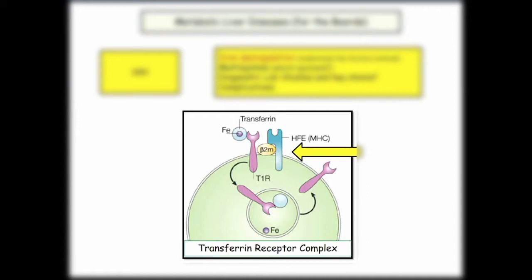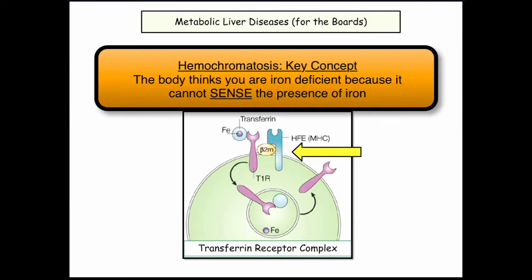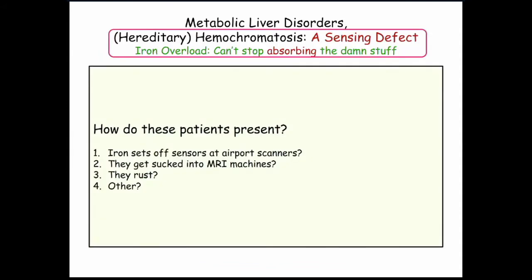This is the complex, and you need an intact complex to be able to absorb iron. If you have a defective HFE, you're not going to sense iron, so your body is going to chronically think that you're iron deficient. The problem with hemochromatosis is you just keep absorbing iron because your body doesn't know it's there due to the defective receptor. Hemochromatosis is a sensing defect — you're blind to the iron.